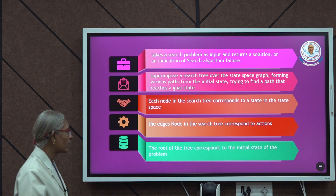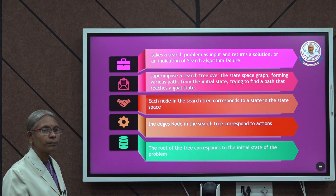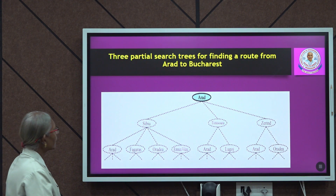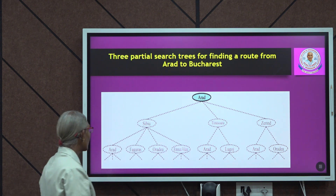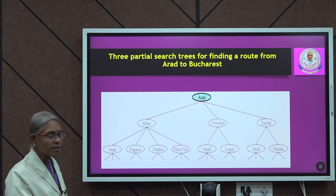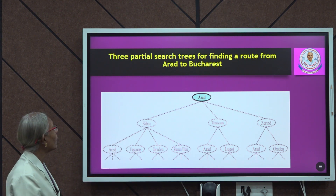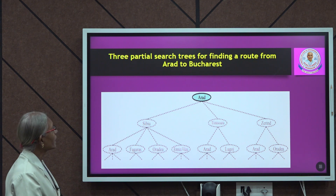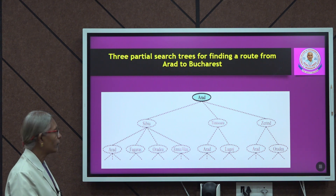We start with the initial state of the problem, which is the root of the tree. Let us take one example: starting from Arad, we want to reach Bucharest. We will build a tree for this. Let us see three partial search trees for finding a route.